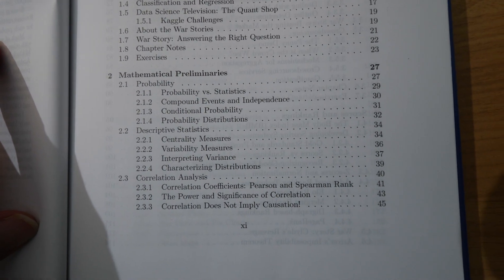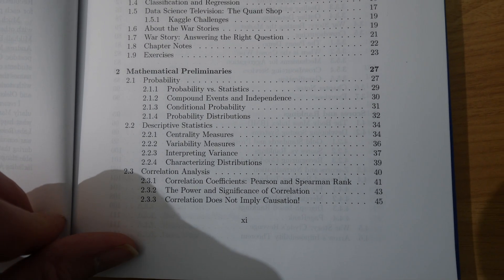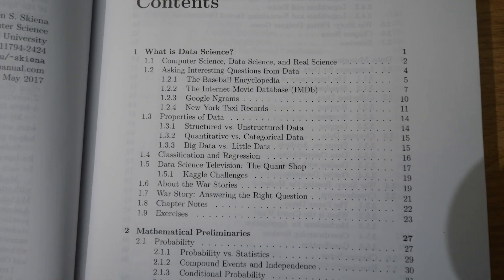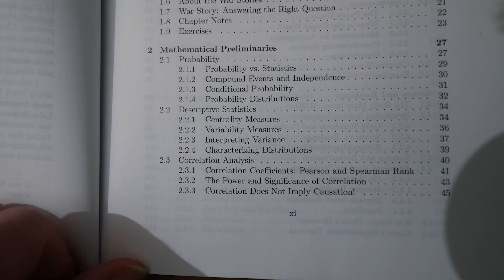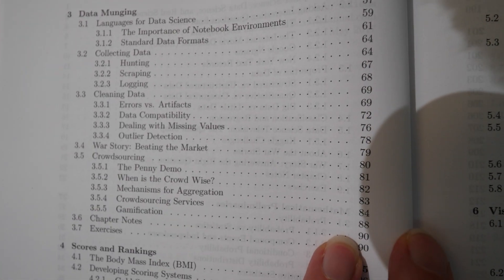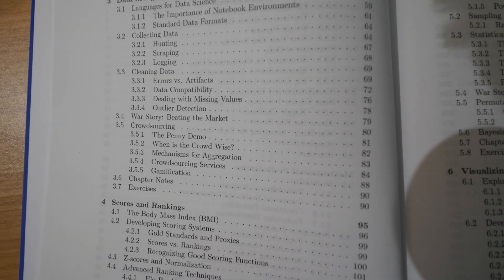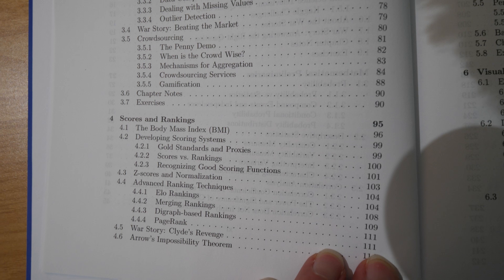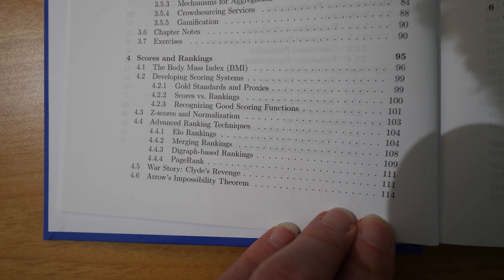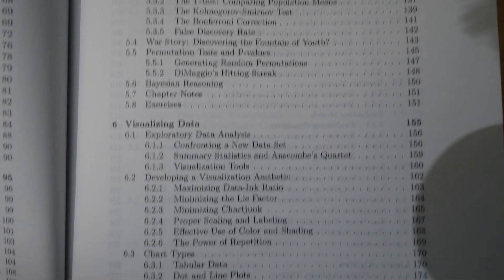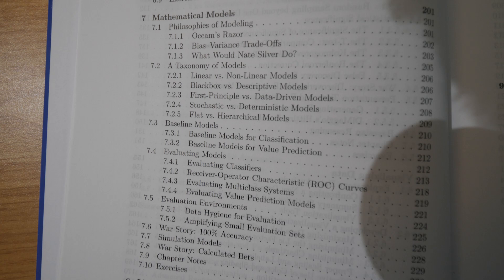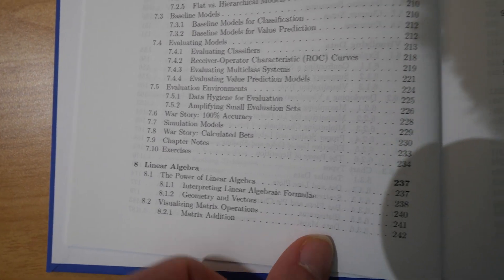So what does it cover? To start with, it covers a high-level look at what data science is. It then covers the mathematical preliminaries — the math you're going to need to do data science — then data munging, which is cleaning data: how you combine different data sets and distill them down to something you can work with. It also covers scores and rankings, statistical analysis, visualising data, mathematical models, linear algebra, linear and logistic regression, distance and network methods, machine learning, and big data.